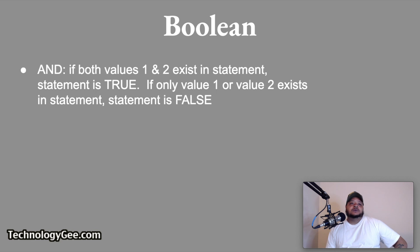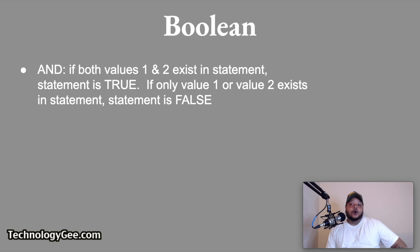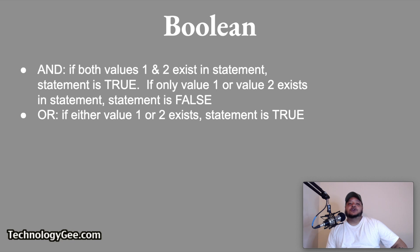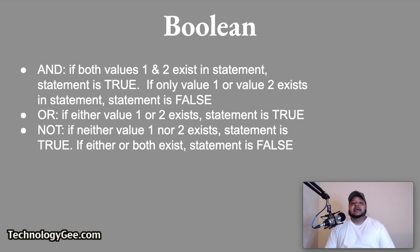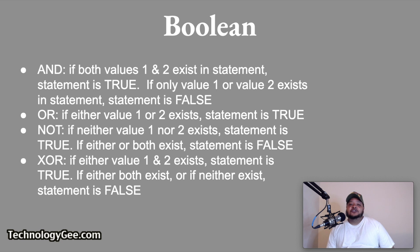Here is what the Boolean search statements actually mean. AND stands for: if both values 1 and 2 exist in a statement, the statement is true; if only value 1 or value 2 exists, the statement is false. OR stands for: if either value 1 or 2 exists, the statement is true. NOT stands for: if neither value 1 nor 2 exists, the statement is true; if either or both exist, the statement is false. XOR stands for: if either value 1 or 2 exists, the statement is true; if both exist or if neither exists, the statement is false.